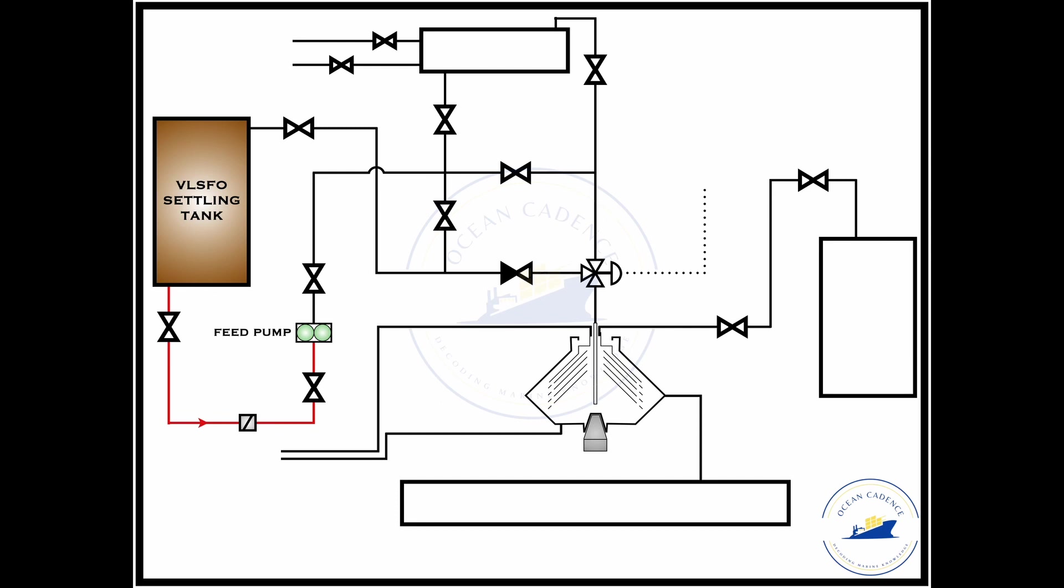In between there would usually be a duplex filter available before the suction into the feed pump to remove the coarse impurities from the settling tank fuel that is being drawn and to make sure that the oil supply further into the heater and thereby the purifier is free of the coarse debris that is there in the settling tank fuel.